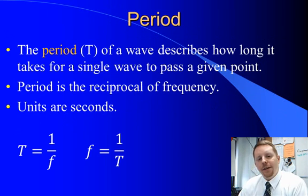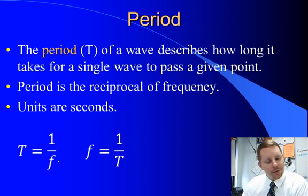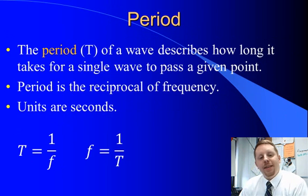Period is very closely related to frequency. Period describes how long it takes for a single wave to pass a given point. So it's the reciprocal of frequency. Period is equal to 1 over frequency and frequency is equal to 1 over period. The units of period are seconds, therefore the units of frequency again are 1 over seconds.